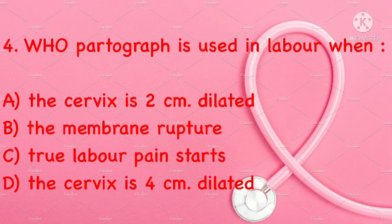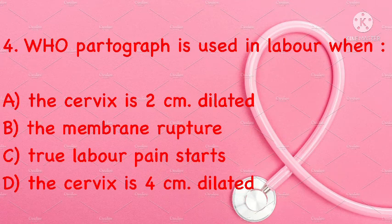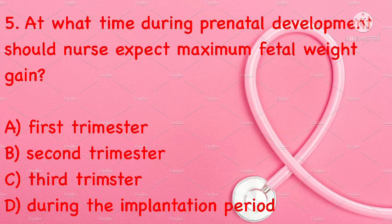WHO partograph is used in labor when: the cervix is 2 cm dilated, the membrane ruptured, labor pain starts, or the cervix is 4 cm dilated. Correct answer is D: the cervix is 4 cm dilated.